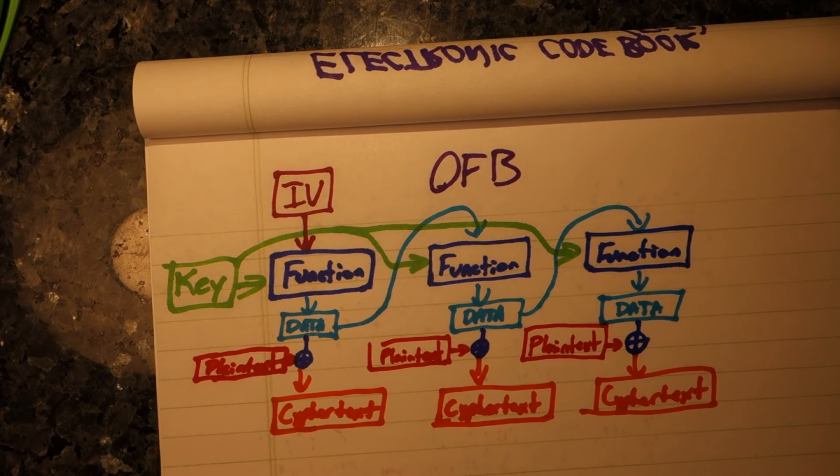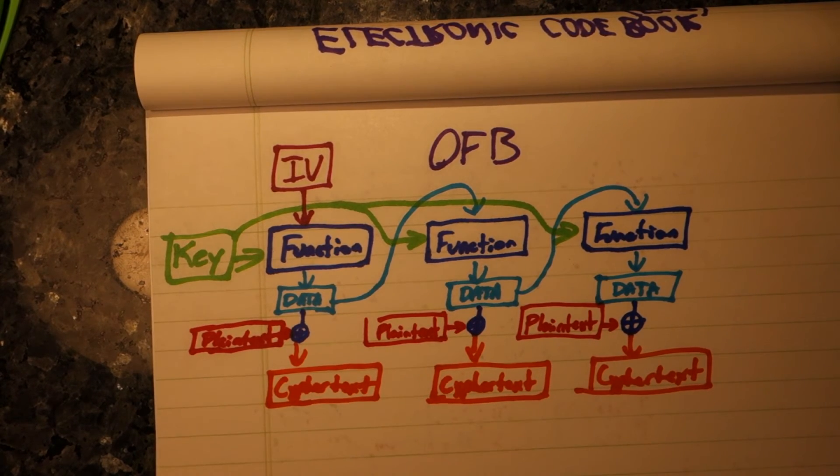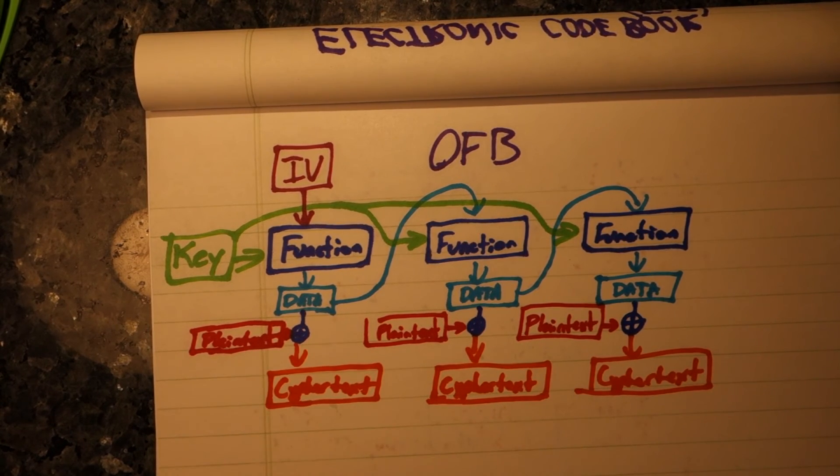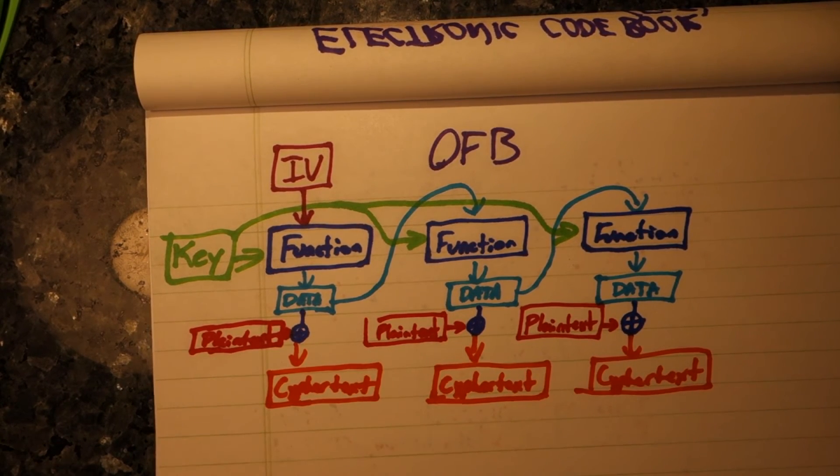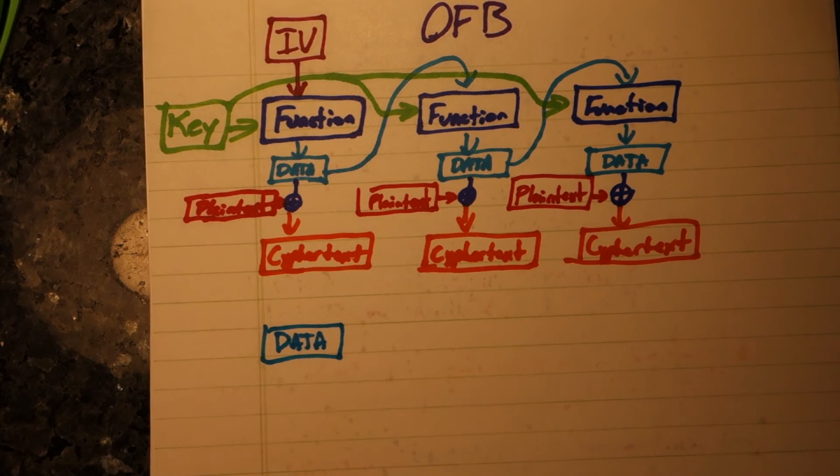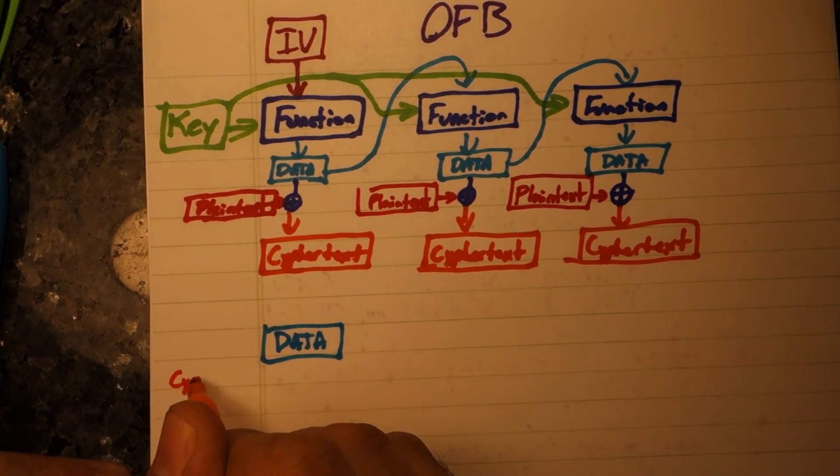To decrypt the data, we just perform the exact same operations, swapping the position of the ciphertext and the plaintext. Note that we only ever need the encrypt operation. We never need the inverse function decrypt.